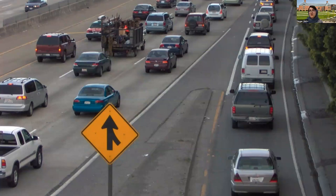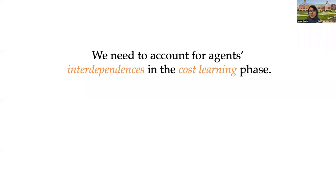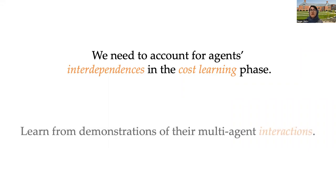And to learn accurate cost functions for these interactive tasks, we propose that we need to account for agents in their interdependencies in the cost learning phase. And we propose that we can learn more accurate objectives of agents for interactions by trying to learn their objectives from demonstrations of their multi-agent interactions.